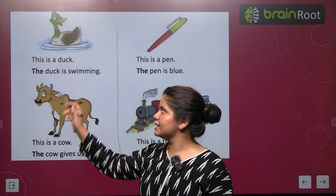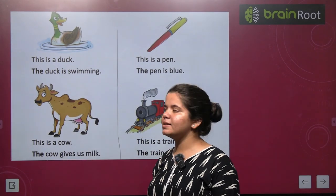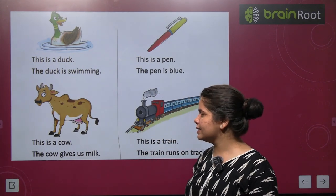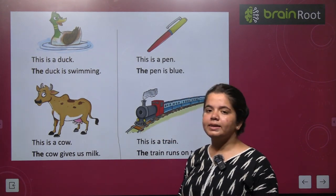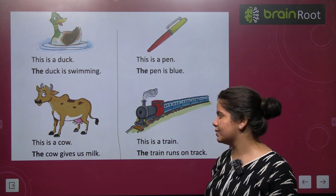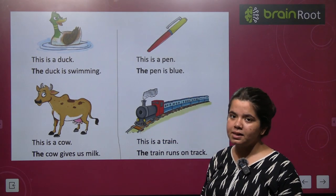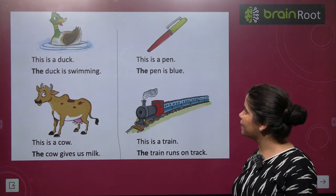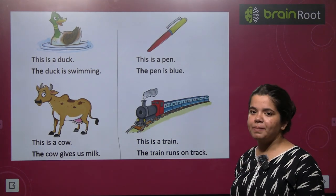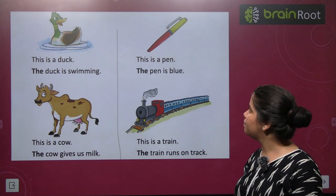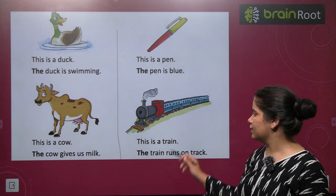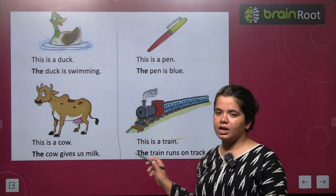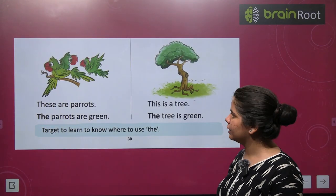This is a duck. The duck is swimming. This is a cow. The cow gives us milk. This is a pen. The pen is blue. This is a train. The train runs on track.